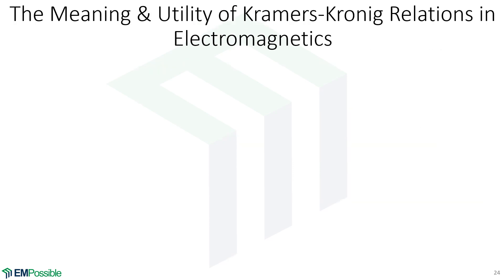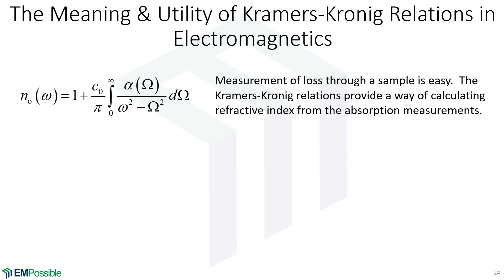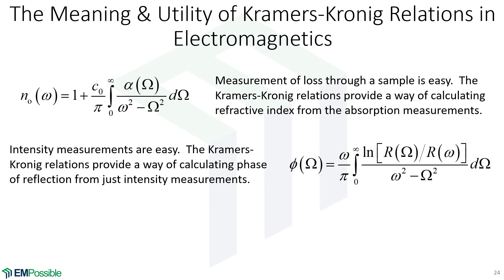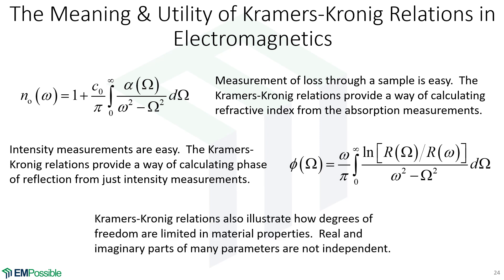In conclusion, here is the meaning and utility of the Kramers-Kronig relations in electromagnetics. First, it's very easy to measure loss through a sample — for example the absorption coefficient — but much more difficult to measure refractive index. Applying the Kramers-Kronig relation lets us retrieve refractive index from a simple measurement. Second, we can take an easy intensity measurement such as reflectance and calculate the phase of reflection. Third, we are somewhat limited in material properties — we can't arbitrarily choose the real and imaginary parts independently, because they depend on each other.